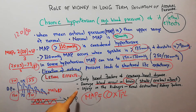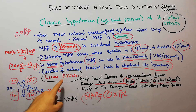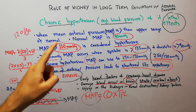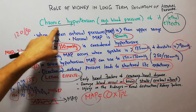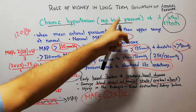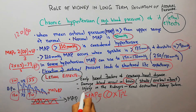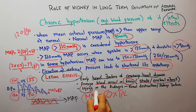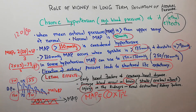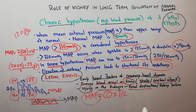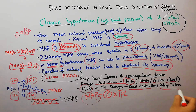Finally, increased mean arterial pressure or chronic hypertension can cause injury to the kidneys, potentially leading to renal destruction or kidney failure.